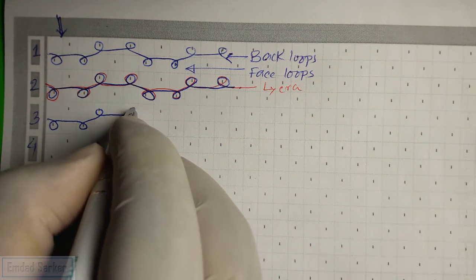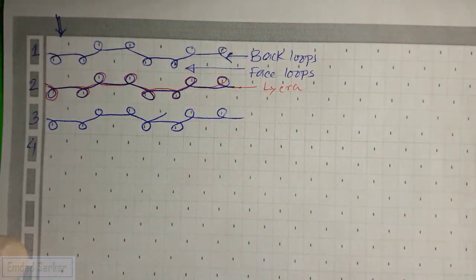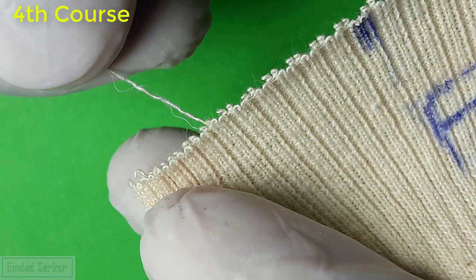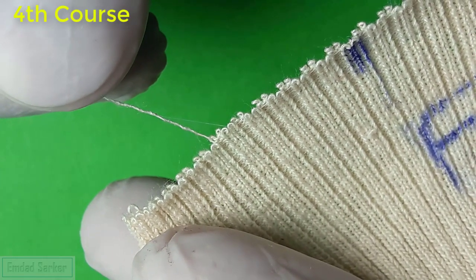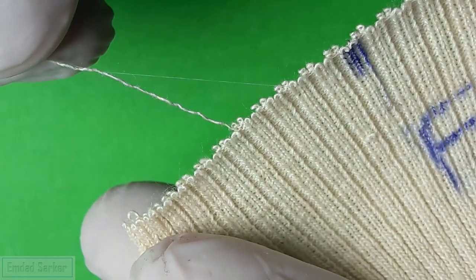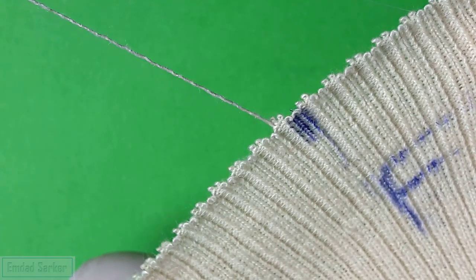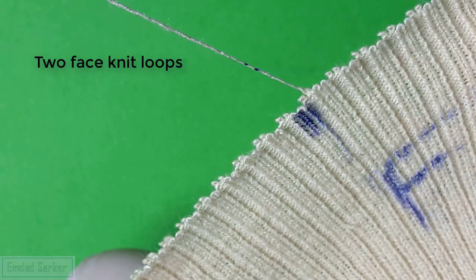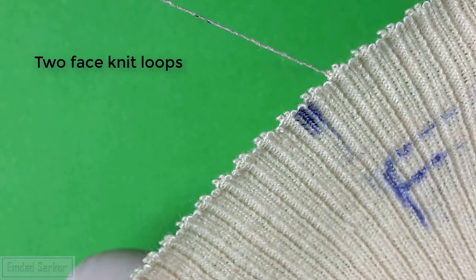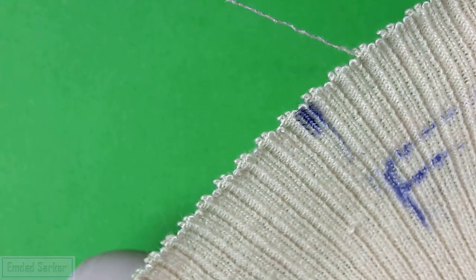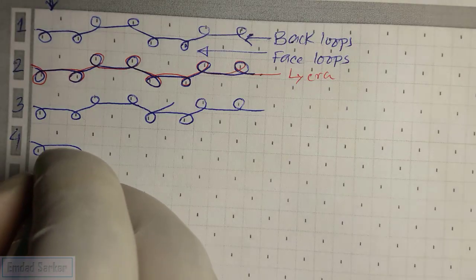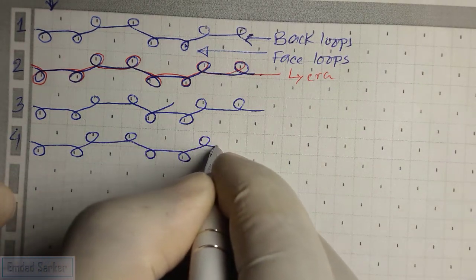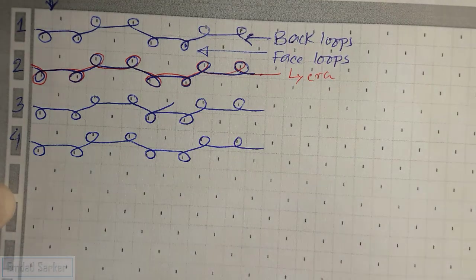In the case of the fourth course, a cotton yarn and a lycra yarn are coming together. Again in the colored portion: two face loops and two back loops. So all the courses are the same in construction — face loop, two back loop, two face loop, two back loop, two face loop, two back loop — for lycra.